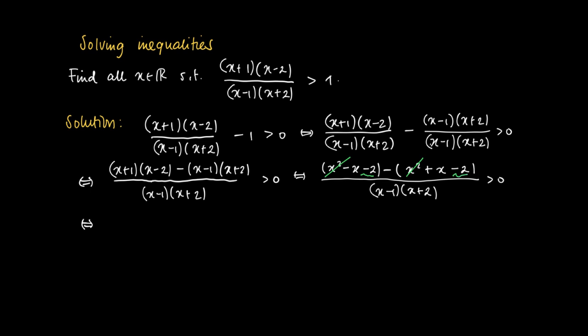So we write -2x divided by (x-1)(x+2). We may write it equivalently by leaving out the minus sign on the left hand side. Then we get 2x divided by (x-1)(x+2) should be smaller than 0.